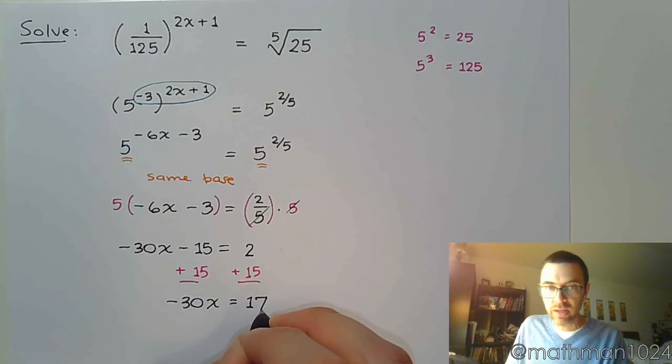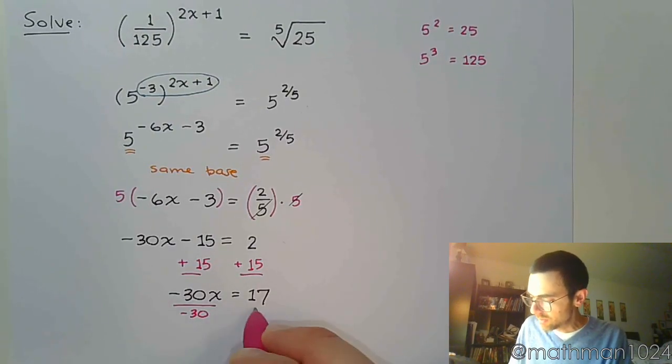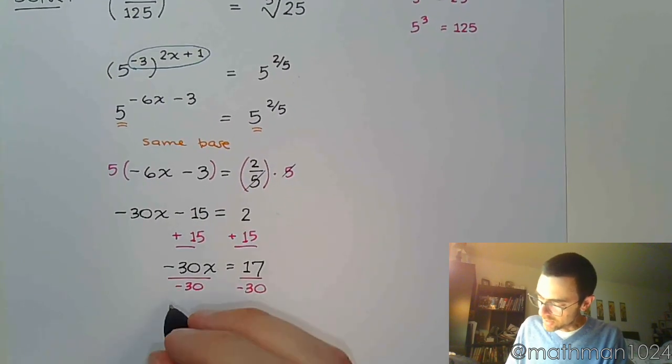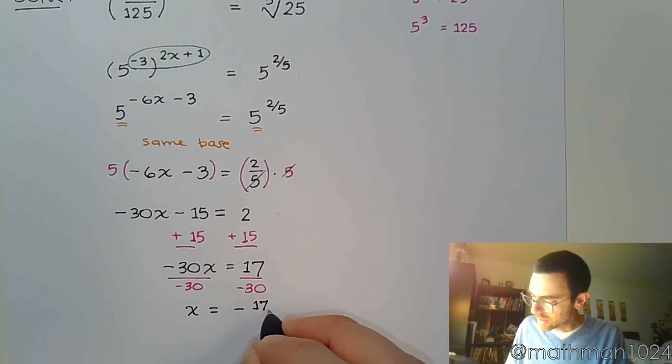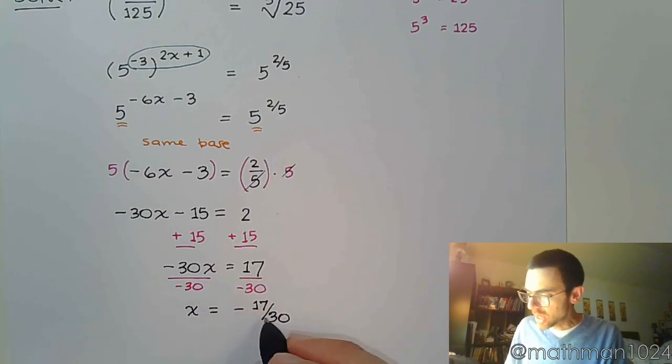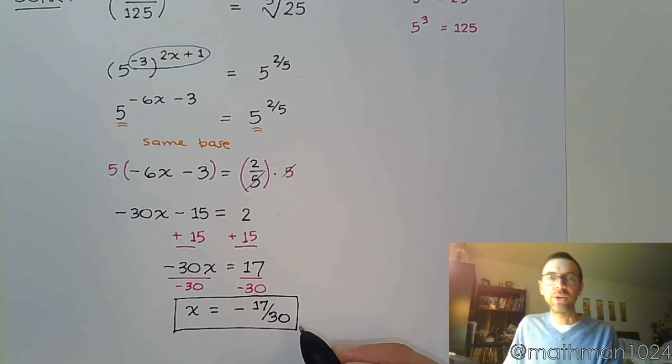So plus 15 to move the constant to the other side. So negative 30x is equal to 17. And in our final step, divide both sides by that coefficient, and we find out that x is equal to negative 17 over 30. Reduce this if you can, but this guy's already reduced, so we are totally done right here. There you go.